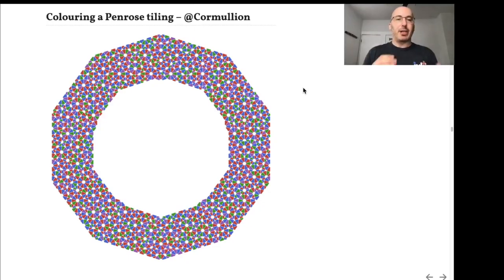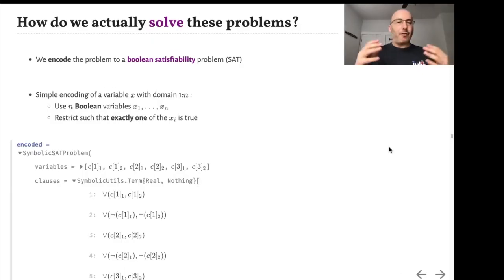Here's an example of coloring a much more complicated graph. This is a design by Kormulian for the JuliaCon 2019 t-shirt. We took this Penrose tiling and colored it using a graph coloring algorithm. This runs in under one second with this tool. So far it seems very magical.